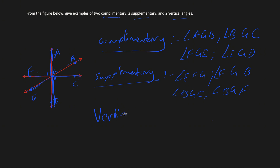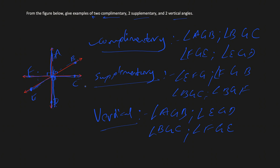For vertical angles, we look for opposite angles formed by intersecting lines. One example is angle AGB and its opposite angle EGD. A second example is angle BGC and its opposite angle FGE. You could also pick angle FGA and its opposite angle CGD, or angle FGD and angle AGC. There are many more examples, but since we only need two examples of each, these cover complementary, supplementary, and vertical.